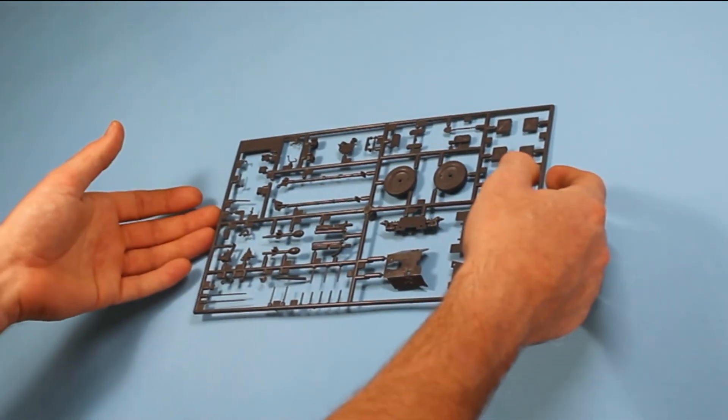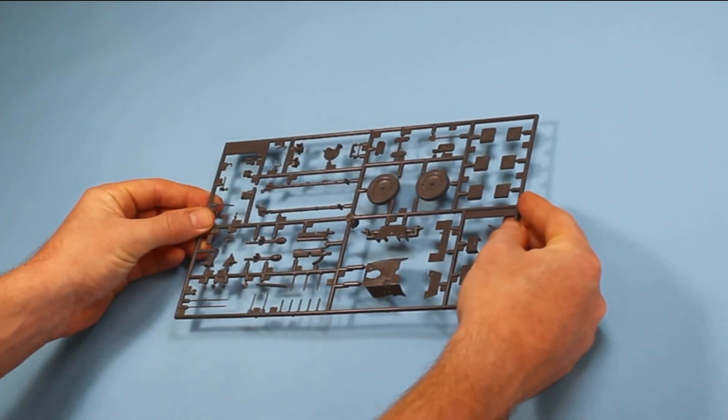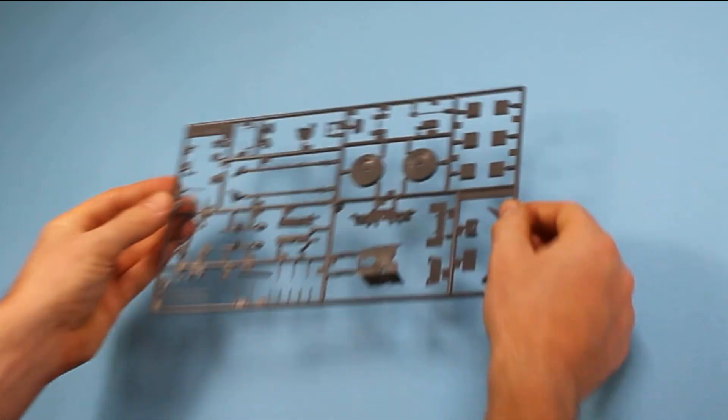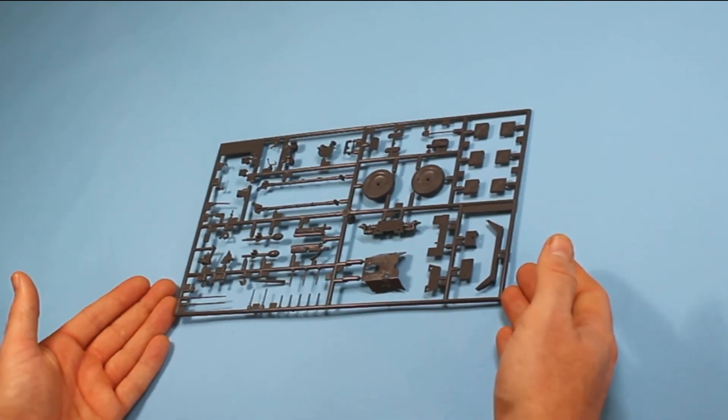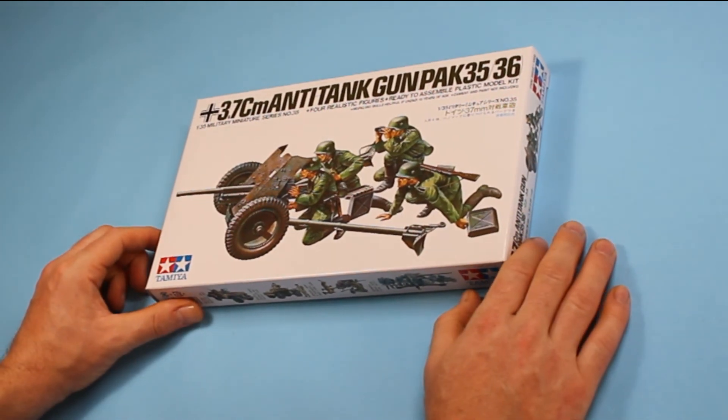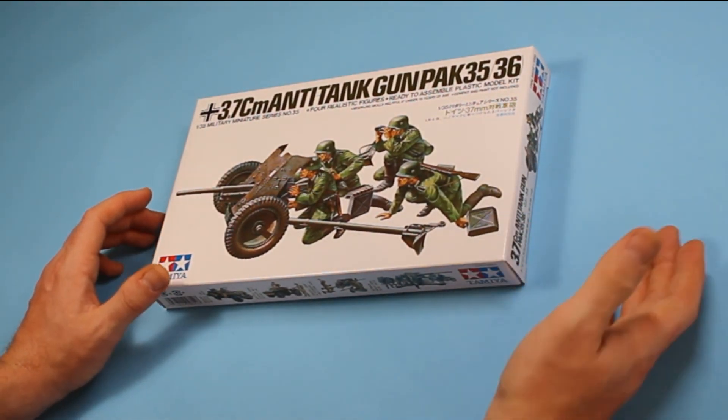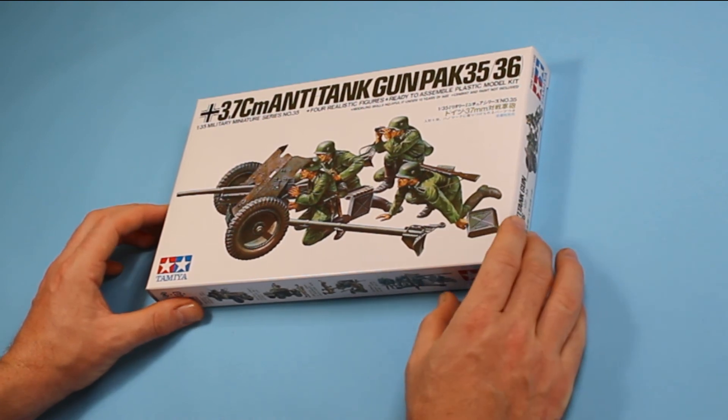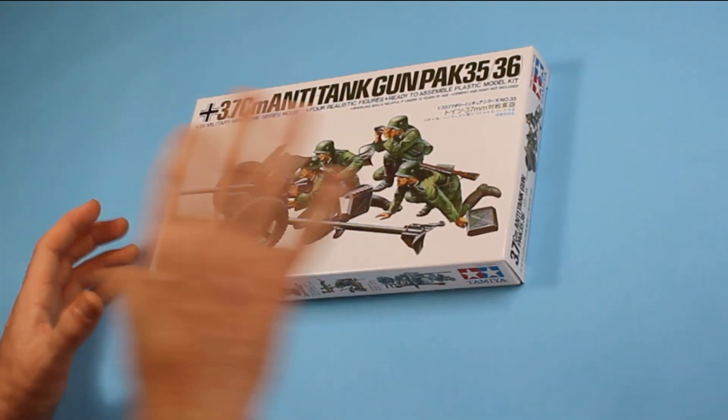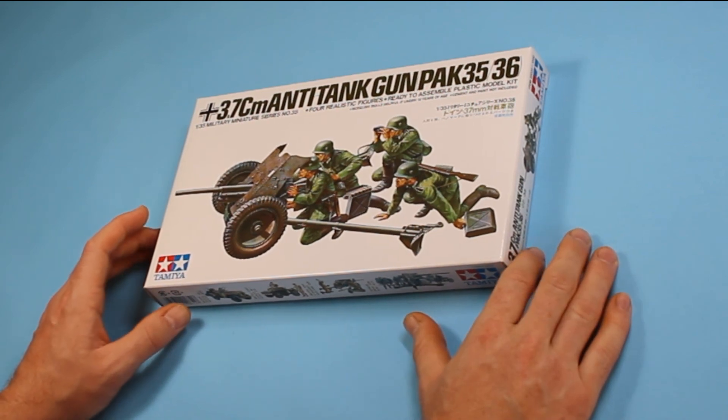So I'm going to put this one together and film it and do a bit of a build log. I'll probably have this together in quite a short video. So I hope you enjoy and there's a quick little review just to have a look at what's inside the box. So that is the 3.7cm anti-tank gun or the Pak 35-36 by Tamiya and that's kit number 35. That gives you an idea of how early in the range it is.